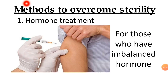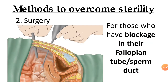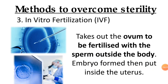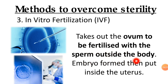Next are the methods to overcome sterility. First, hormone treatment — for those who have imbalanced hormones, they can receive hormone treatment. Next is surgery, for those who have blockage in their fallopian tubes or sperm duct issues. The third method is in vitro fertilization, IVF — the ovum is taken out and fertilized with the sperm outside the body. The embryo formed is then placed inside the uterus, so fertilization occurs outside of the body.